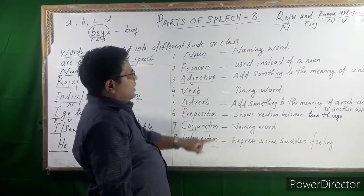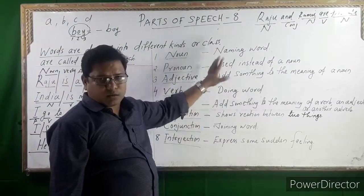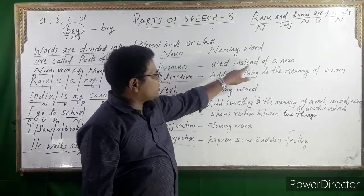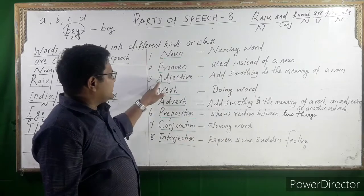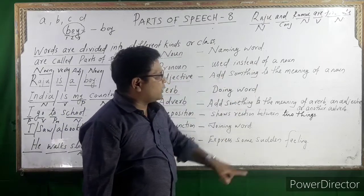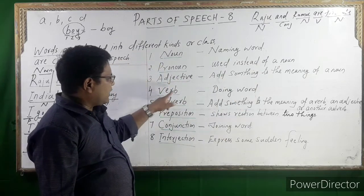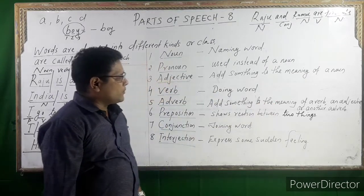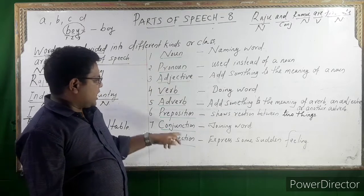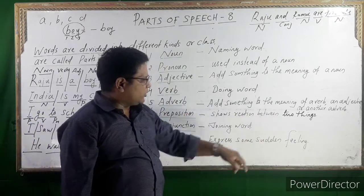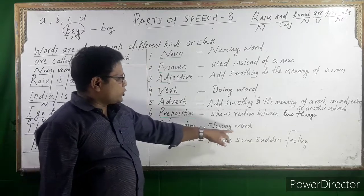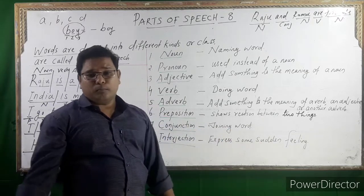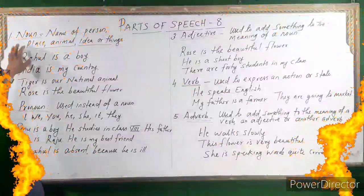Noun is a naming word. Pronoun is used instead of a noun. Adjective adds something to the meaning of a noun. Verb is a doing word. Adverb adds something to the meaning of a verb, an adjective, or another adverb. Preposition shows the relation between two things. Conjunction is a joining word. Interjection expresses a sudden feeling.